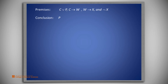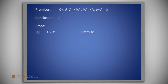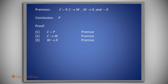If you would like to produce the proof on your own, you should pause this video now. The proof begins with listing the four premises: C or P, C implies W, W implies X, and not X.